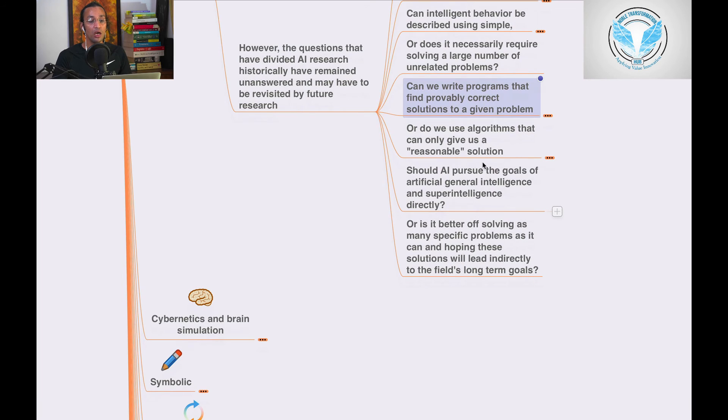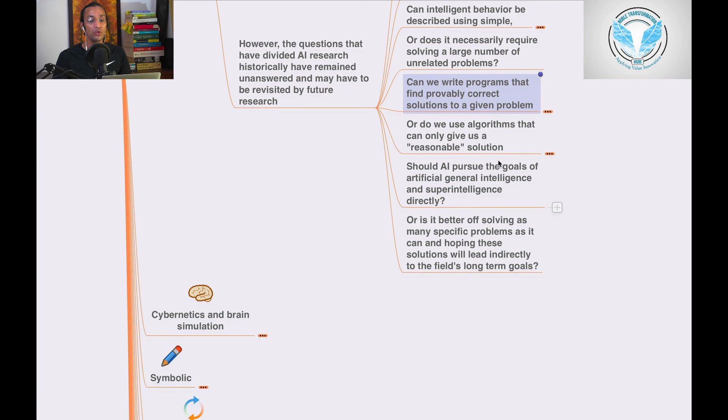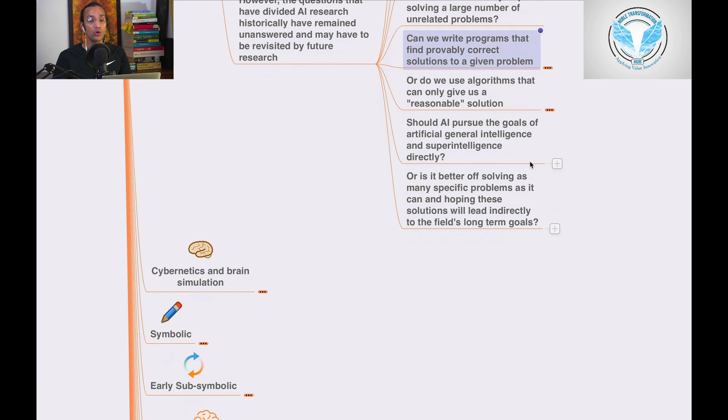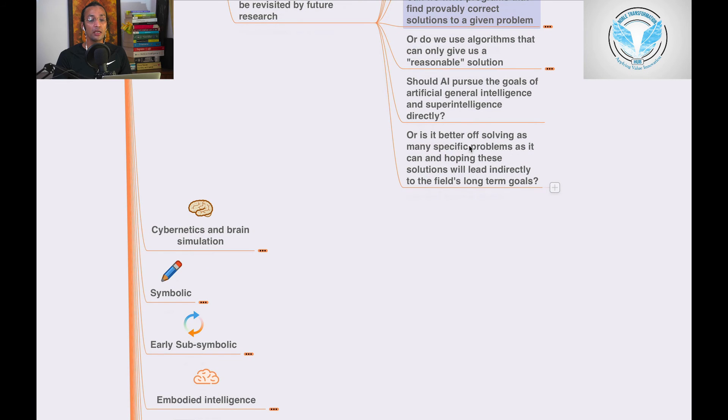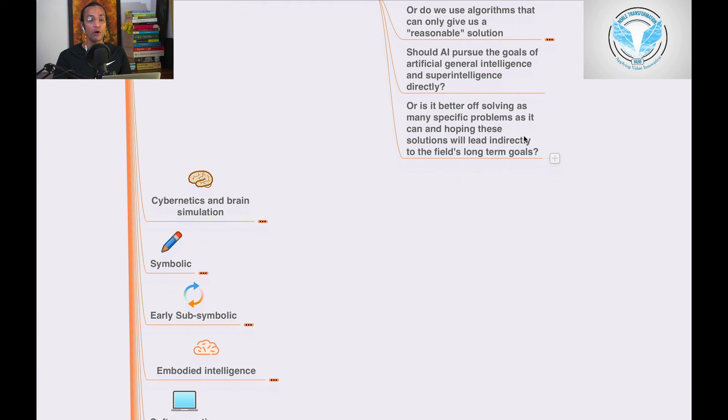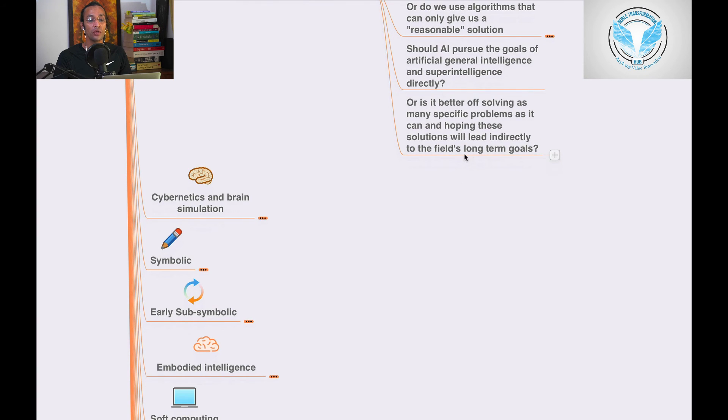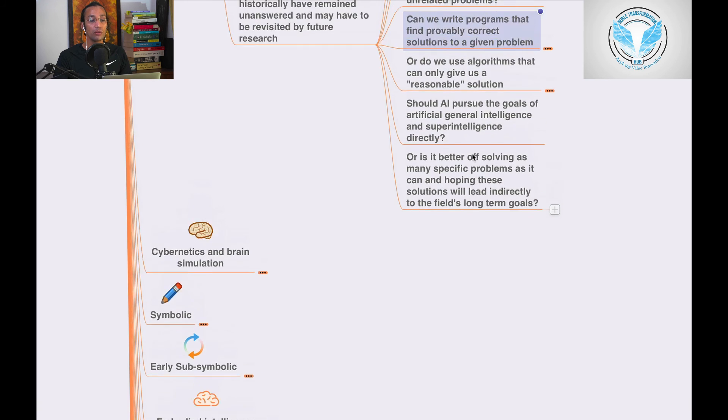Should AI pursue the goals of artificial general intelligence and superintelligence directly, or is it better off solving as many specific problems as it can, hoping these solutions will lead indirectly to the field's long-term goals?